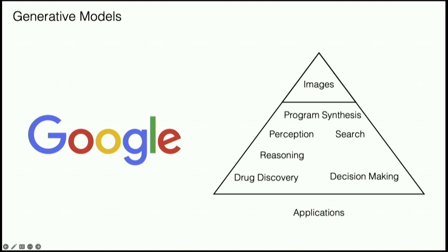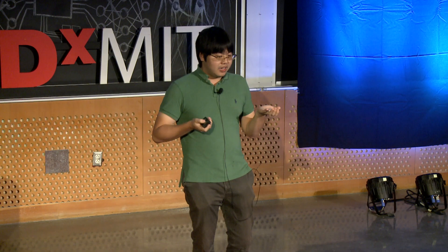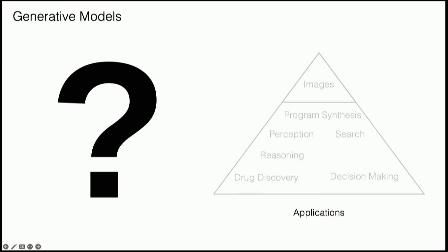You could also take the hundreds of millions of search results on the internet and fit a single generative model to this. Once you have this generative model, you can prompt it with a question, and the model can search through the hundreds of thousands of documents it's learned and give you the answer — a really fast way to immediately get the result you want. And really, these are just a couple of applications. There are hundreds of thousands of other applications you could potentially do with generative models.